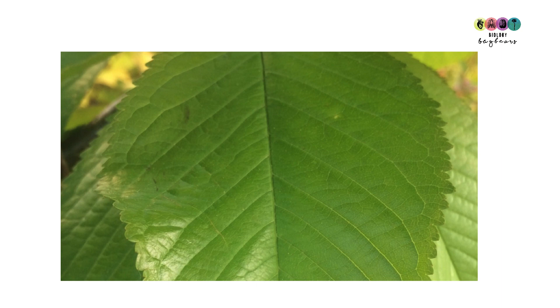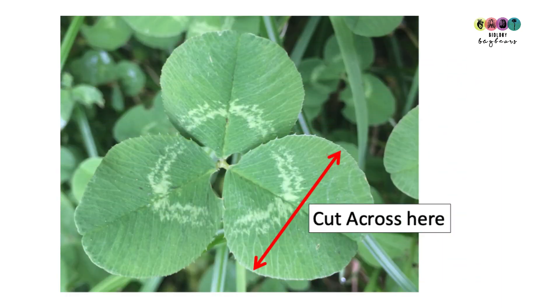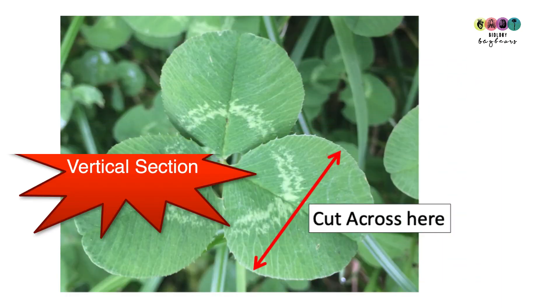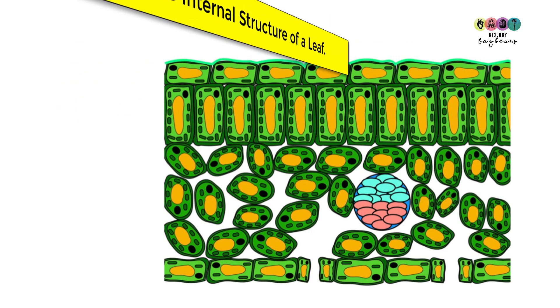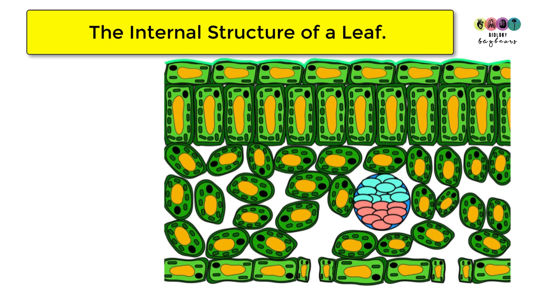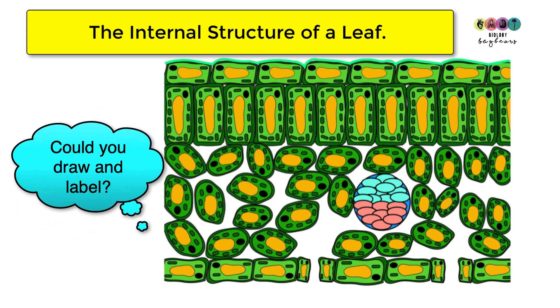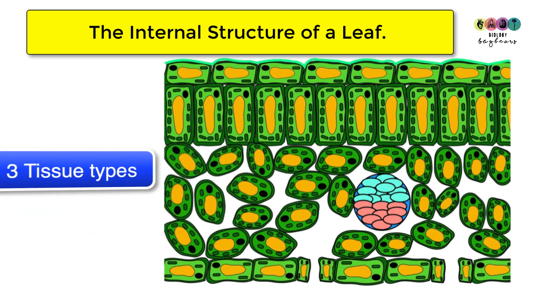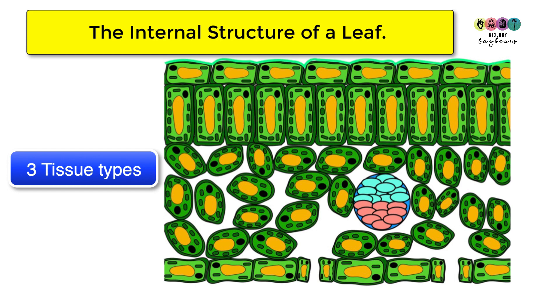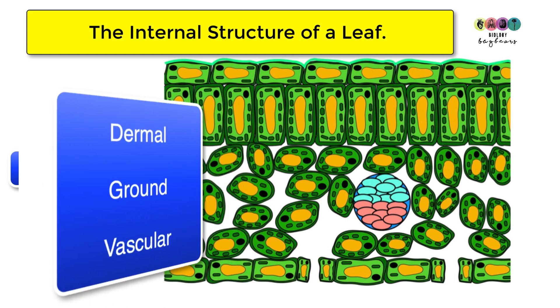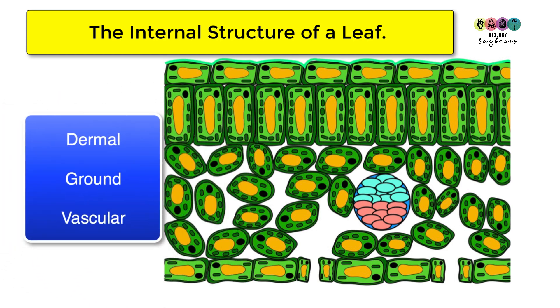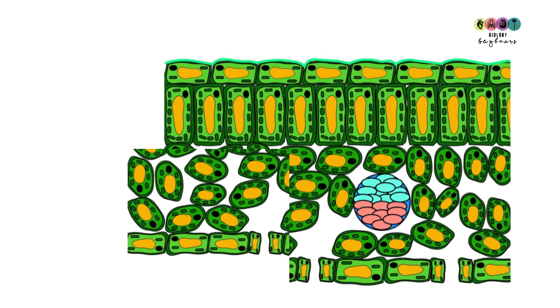In this video we're going to look at the internal structure — a vertical section of the leaf. This is an important diagram; you could be asked to draw it or label it, so it's worth learning. As always with plant diagrams, always mark in your three tissue types: dermal, ground, and vascular — that's the best place to start.